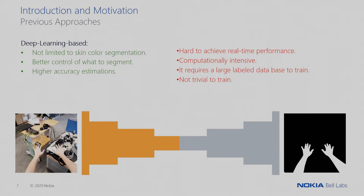Finally, we have a very notable approach: deep learning-based segmentation, which has several advantages. For instance, it's not limited to one color — it can learn to segment different colors, clothes, shapes, and whatever we need to segment. This gives us better control of what we segment and achieves much higher accuracy. However, it has drawbacks: it is very computationally intensive, making it quite hard to use in real-time applications, and it requires a large dataset to train, which really complicates the training procedure.